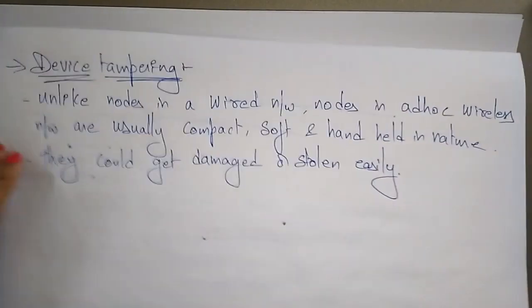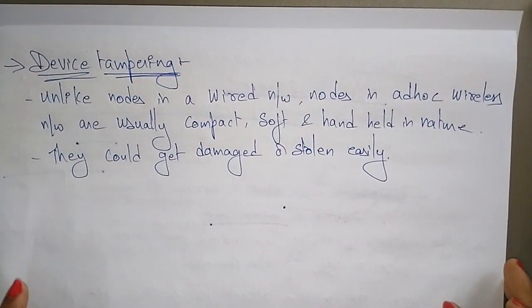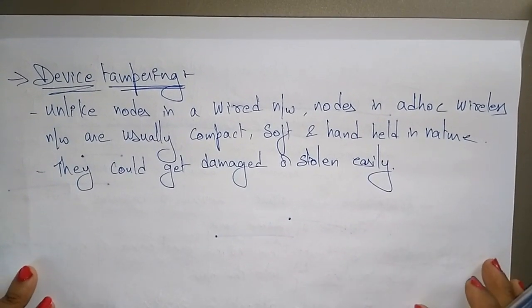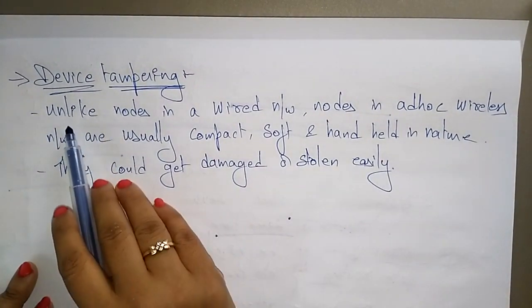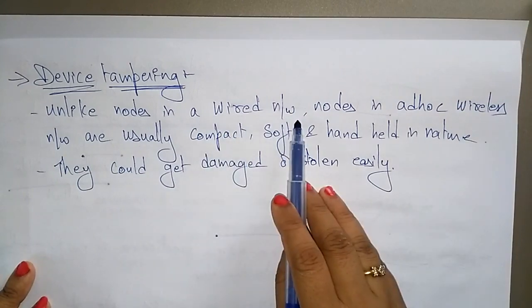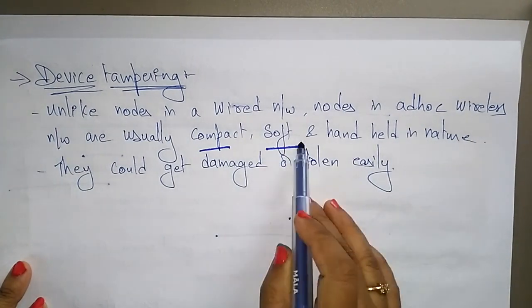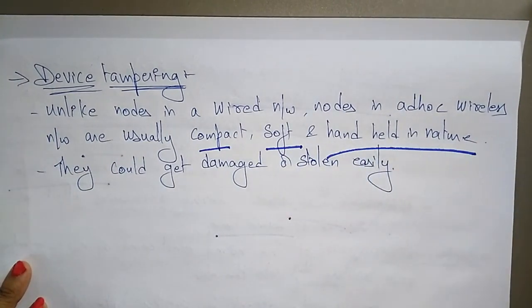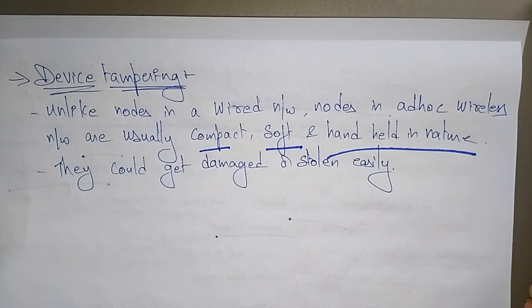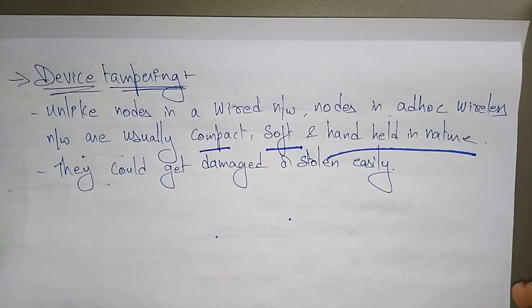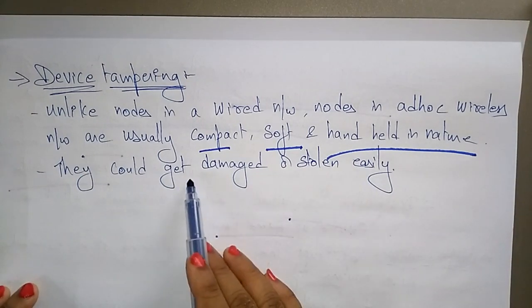The last multi-layer attack is device tampering. Unlike nodes in a wired network, nodes in ad hoc wireless networks are usually compact, soft, and handheld in nature. Because of this, they could get damaged or stolen easily.